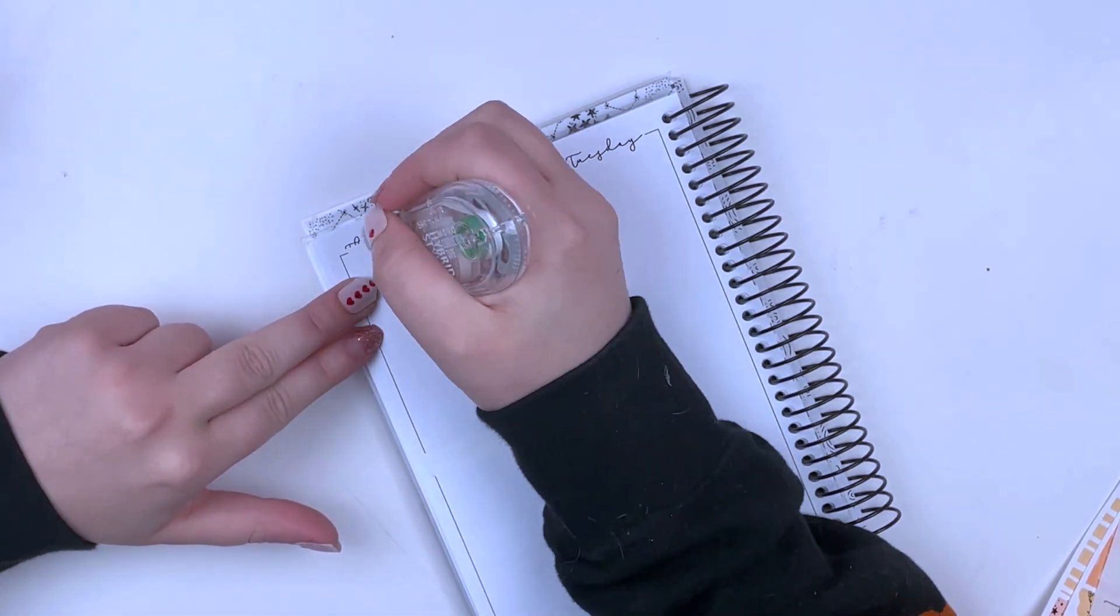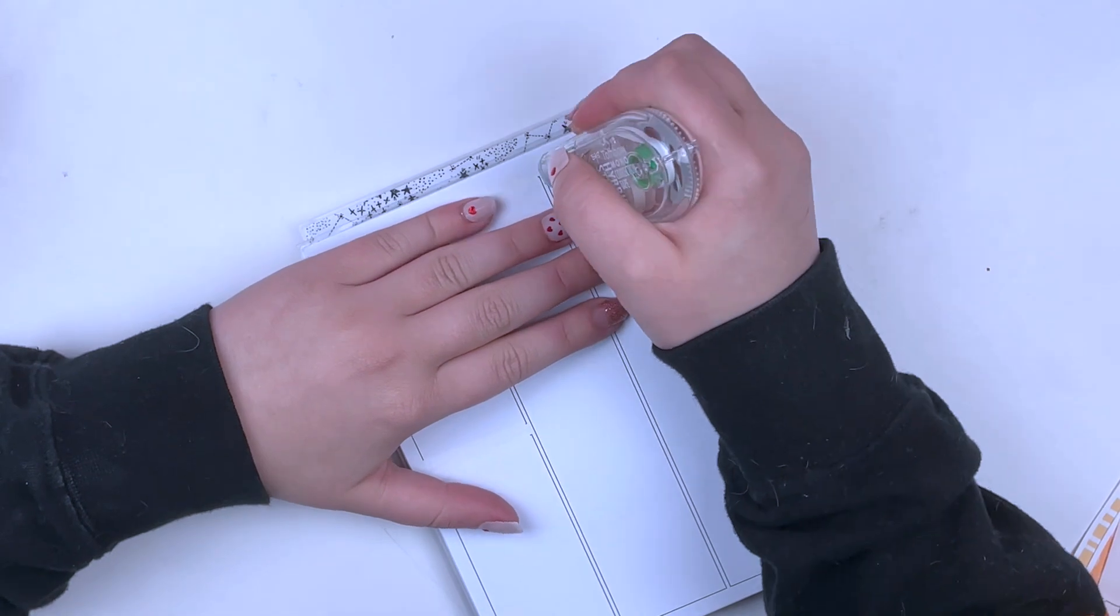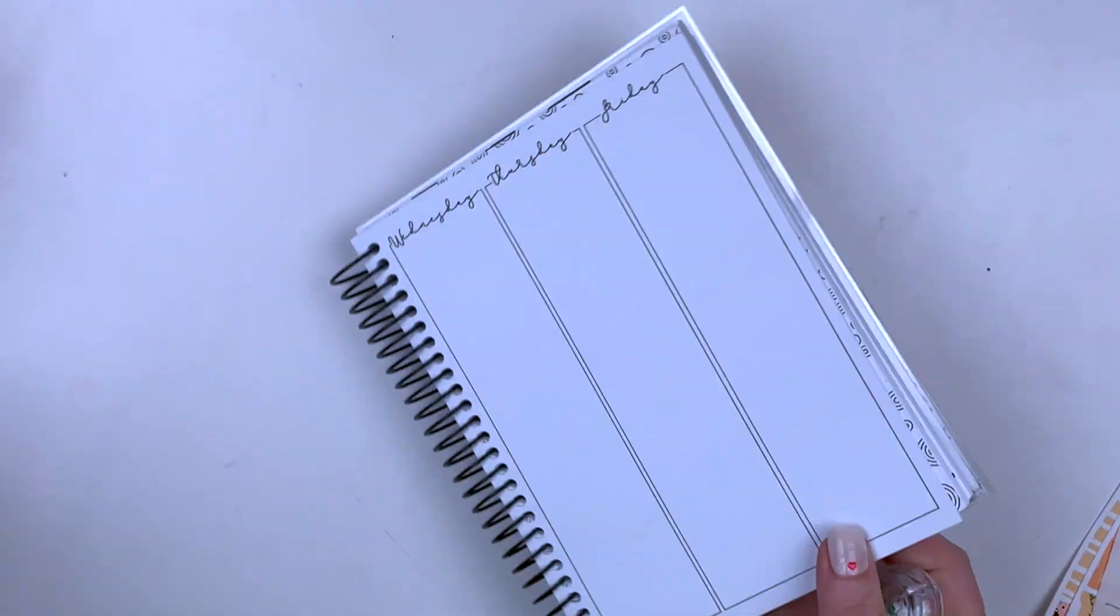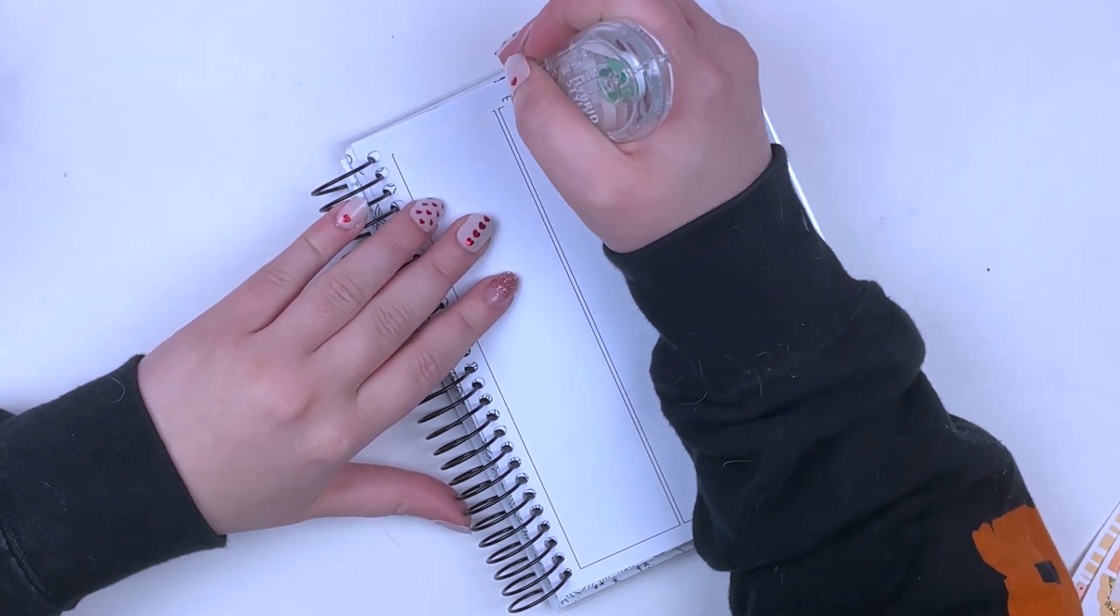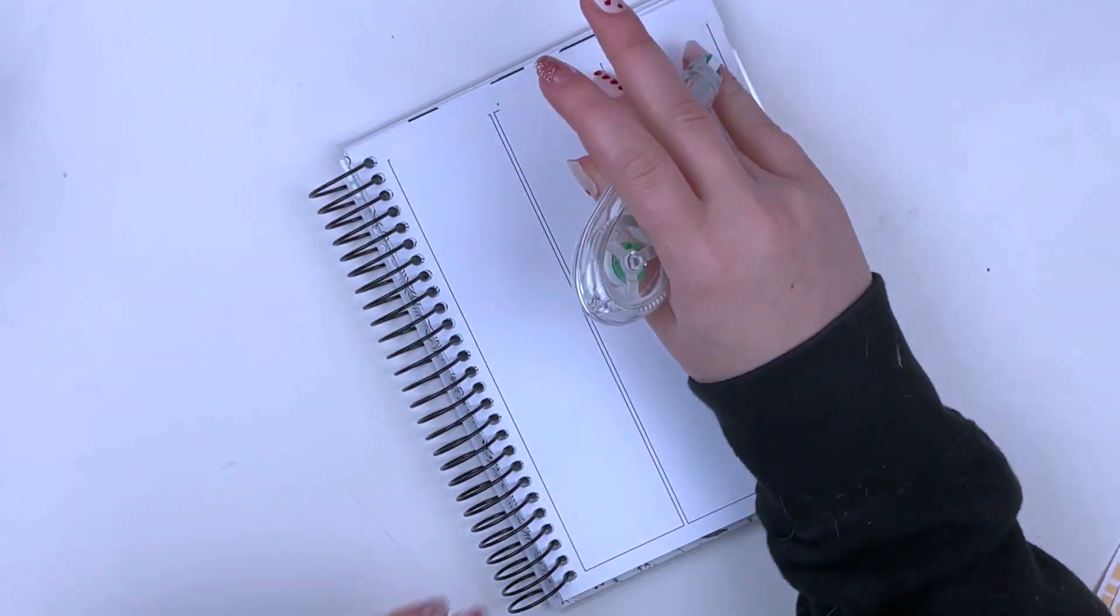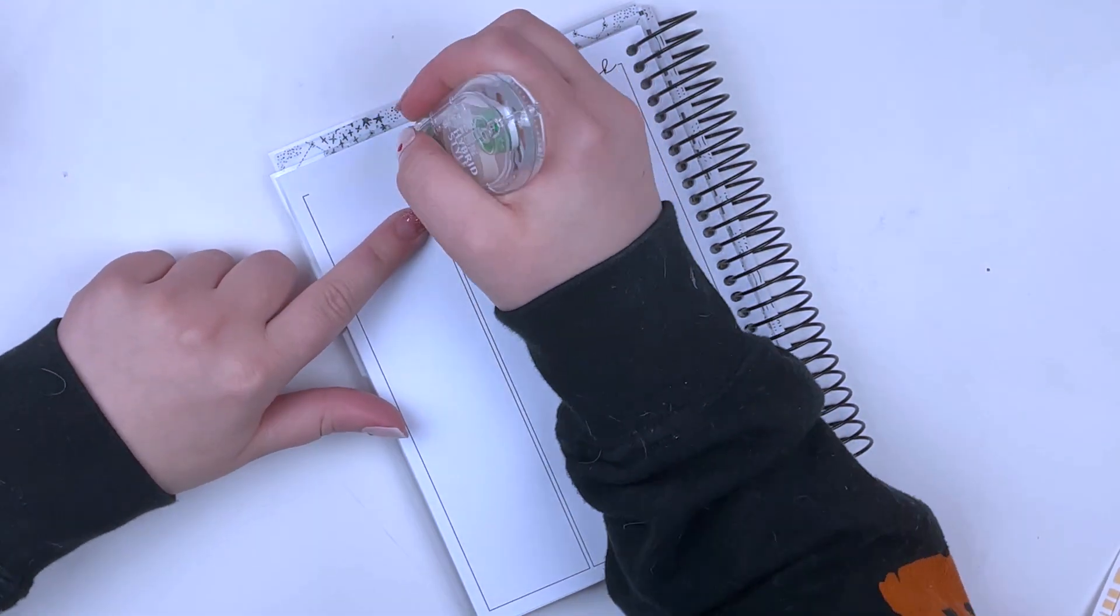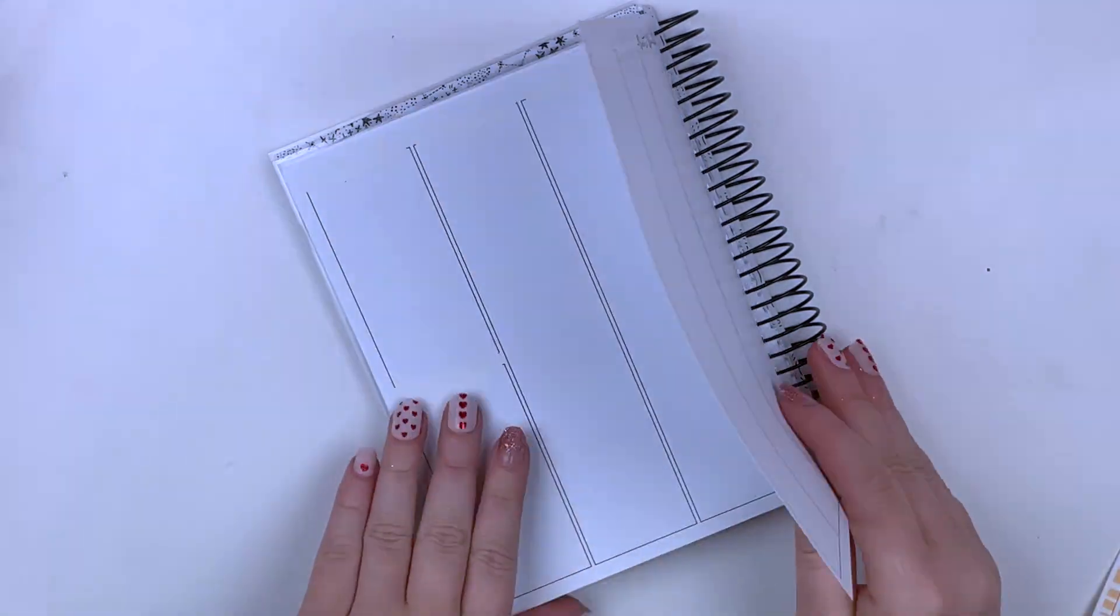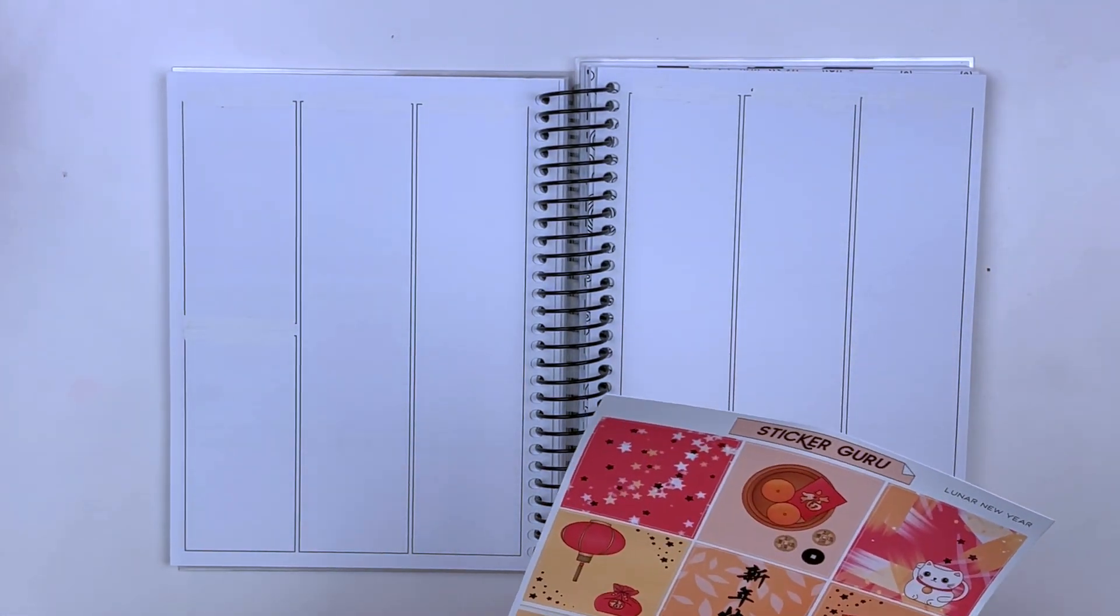I'm super excited to use this kit. I was a little bummed to see whenever I was planning out kits with Tom that Lunar New Year or Chinese New Year fell in the same week as Valentine's Day, so I was excited that I ended up getting this kit in a smaller format because that means I could use it in my B6 planner.